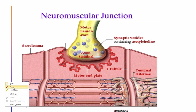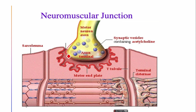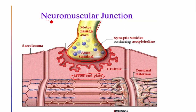The neuromuscular junction is very common in our body and requires a lot of attention to understand. Here you can see this is a neuron, and as we know our muscles have neurons — mostly motor neurons. This is a motor neuron with an axon, and it ends at a muscle. That ending is known as the motor end plate, creating the neuromuscular junction. There is no second neuron here — the neuron is connecting with a muscle. You can see the neurolema of the neuron and the sarcolemma of the muscle are joined together.